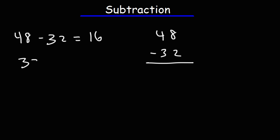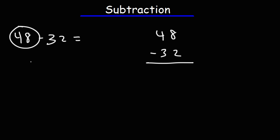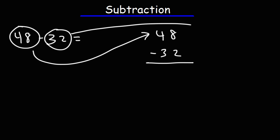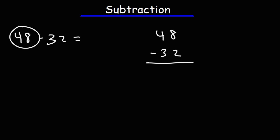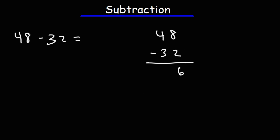If we were to reverse the order, we would get negative 16, so we shouldn't do that. Therefore, the first number goes on top and the second number goes on the bottom. To subtract, we start with the first column on the right. 8 minus 2 is 6, and then we move to the next column on the left. 4 minus 3 is 1, so we get the answer 16.